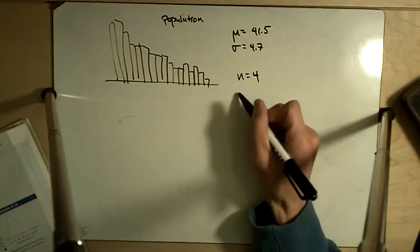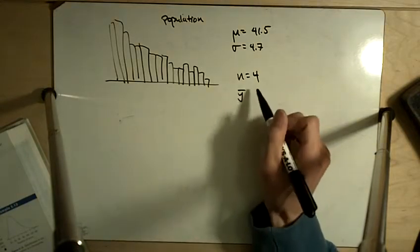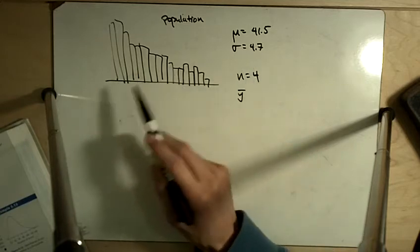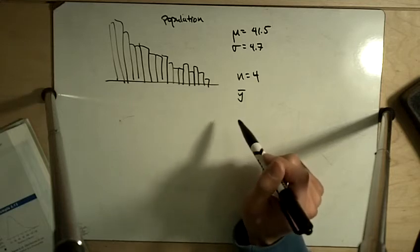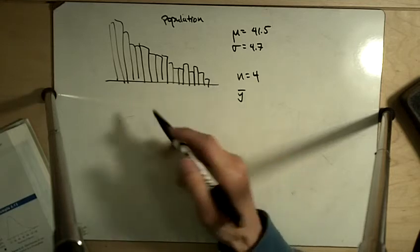Calculate the sample mean, y bar. So we're taking 4 random individuals out of this population and we're taking the average there. And it says what is the mean of the sampling distribution?